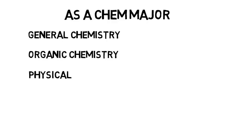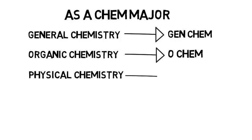As a chem major, you'll take general chemistry, organic chemistry, and physical chemistry, or as you'll hear them called, gen chem, o chem, and p chem. These are really the bulk of your classes and you need to take about a year to complete.